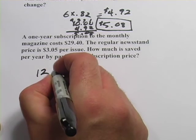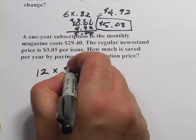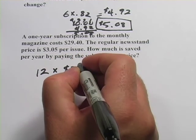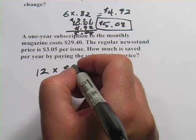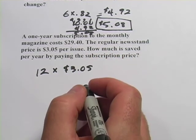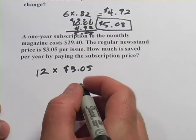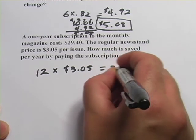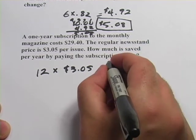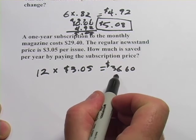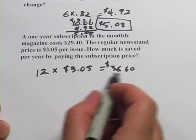We would multiply 12 months times $3.05 to figure out your yearly cost of buying it at the newsstand. And that would be $36.60. That's the cost of a whole year buying it at the newsstand.